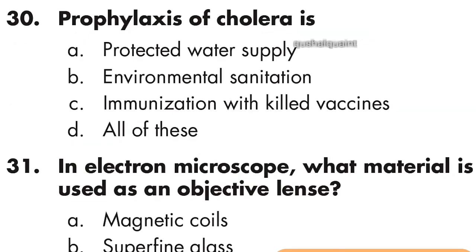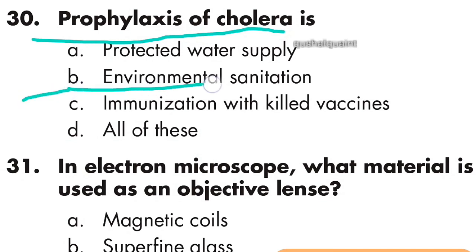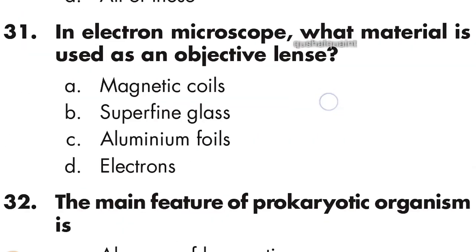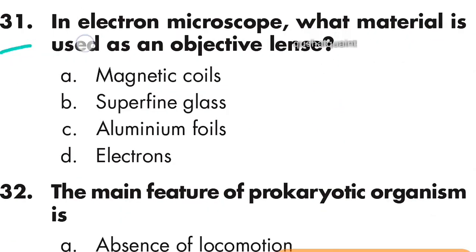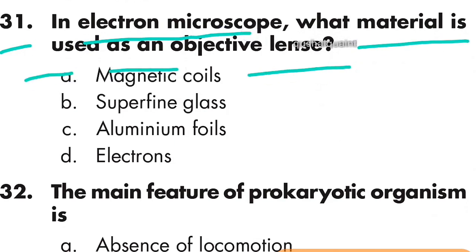Question number 30: Prophylaxis of cholera is environmental sanitation. Option B is right — environmental sanitation. Question number 31: In an electron microscope, the material used as an objective lens is a magnetic coil. Option A is right — magnetic coil.